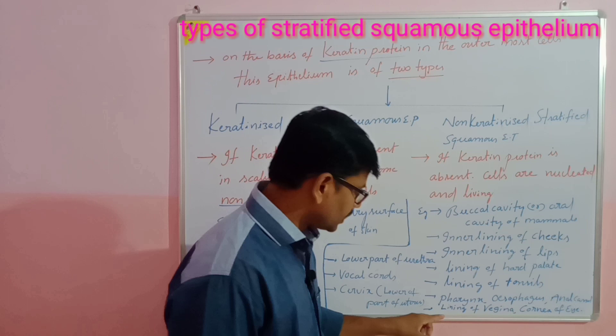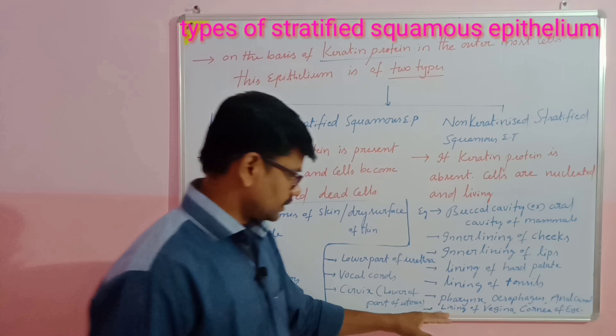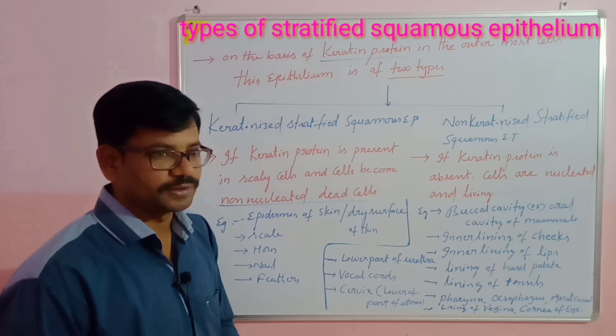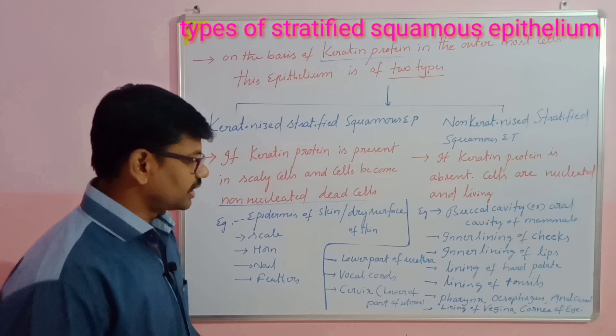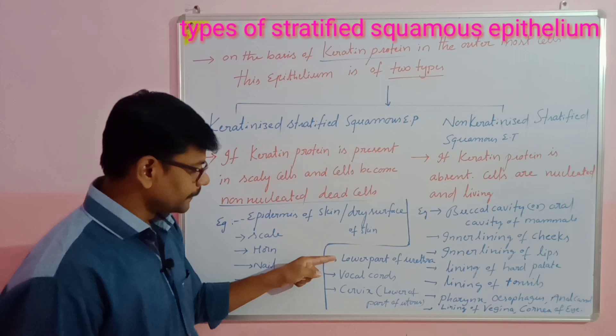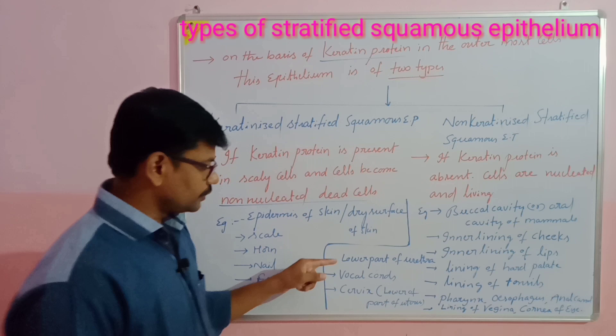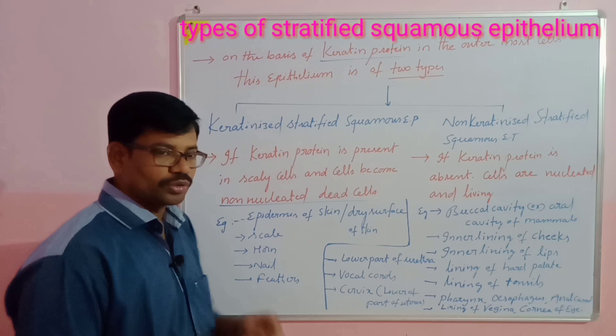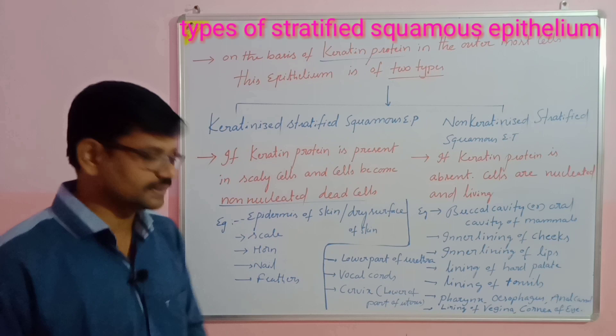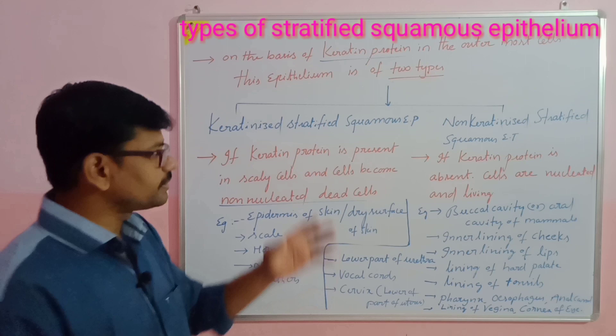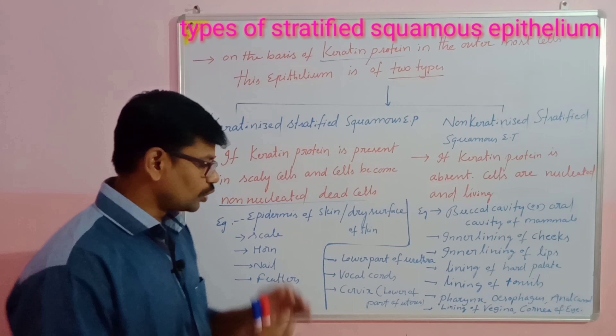The lining of the vagina — the opening of the female reproductive system — and the cornea of the eye, which is the outermost layer of the eye, are made up of non-keratinized stratified squamous epithelium. The lower part of the urethra, the vocal cords present in the larynx region, and the cervix — the lower part of the uterus — are all lined by non-keratinized stratified squamous epithelium.